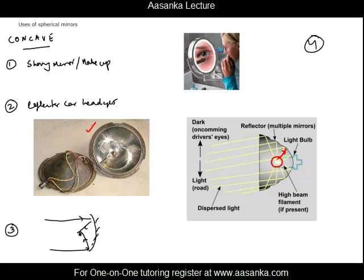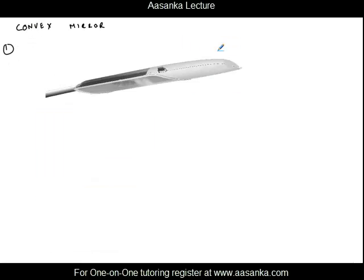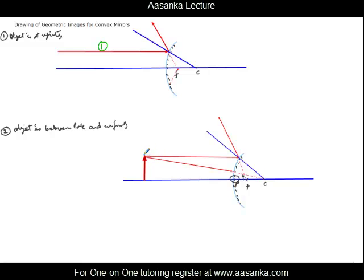Now we discuss uses of convex mirrors. The first and very important use is that convex mirrors are used in street lights. When a light source is placed here, you want it to spread in the maximum direction. This is the property used in convex mirrors — when an object is between the pole and infinity, light gets diverged. So the bulb is placed at the mirror and light spreads in all directions.